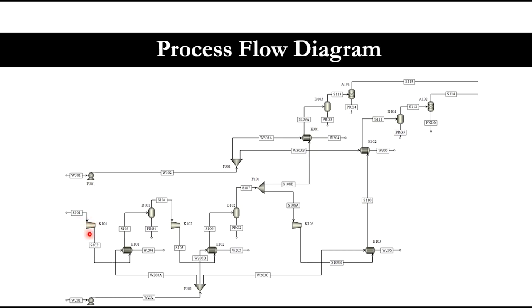It starts from compressor K-101 in this diagram. The feed is compressed and then cooled down in a heat exchanger, which is usually a shell-and-tube heat exchanger. The cooling media is cooling water supplied from a cooling tower. You can see this is a three-stage compression system — this is the first stage, this is the second stage, and the next one is the third stage.